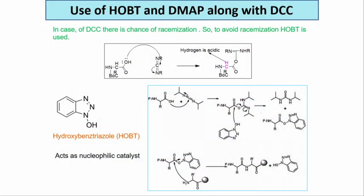We will start from where we have ended. We told you how to do the coupling reaction and what is the coupling reagent - the coupling reagent is DCC. However, DCC has some limitations, one of them is racemization. This slide that is projected shows the mechanism: first, the carboxylic acid of the amine-protected amino acid attacks the electrophilic carbon, and this becomes NH.